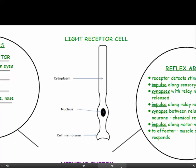This is a light receptor cell like the ones we find in our eyes, and as you'll see it has the normal features of a cell: it's got a cytoplasm, nucleus and a cell membrane.